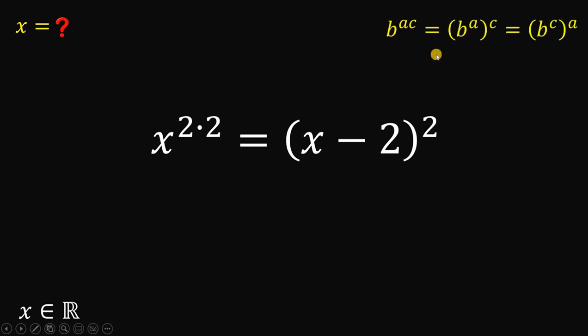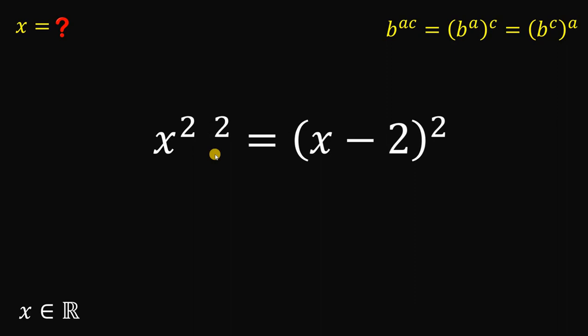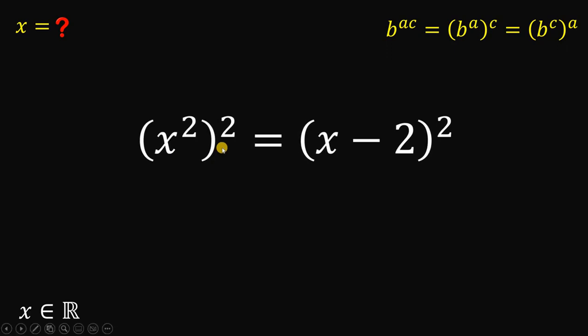If we have b raised to a times c, it is equivalent to b raised to a raised to the power of c. Or, this can be written as b raised to c raised to the power of a. So, x raised to 2 times 2 can be written as x squared raised to the power of 2.